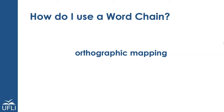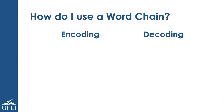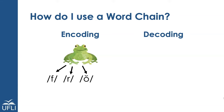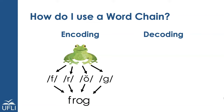One of the underlying skills we're developing through word chains is orthographic mapping, and we can do this through both encoding and decoding. For encoding, we would begin with the spoken word frog. To encode or spell that word, I would first need to think: what sounds do I hear in frog? I hear /f/, /r/, /ɑ/, /g/. Now I want to spell that. For /f/ I can use an f, for /r/ I can use an r, for /ɑ/ I can use an o, and for /g/ I can use a g. Now I've encoded that word.